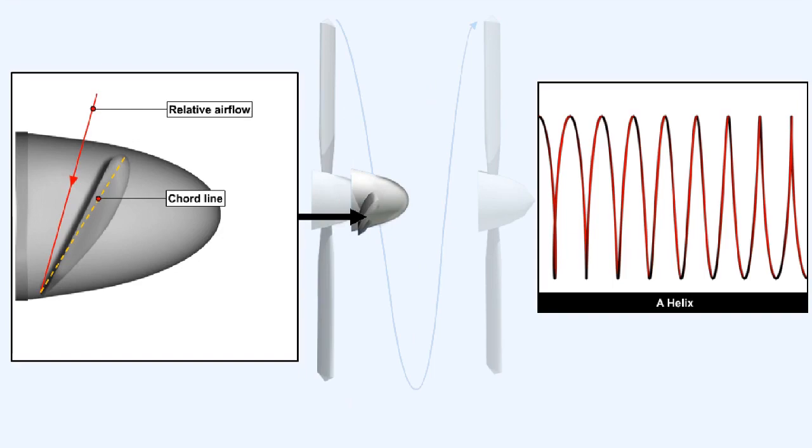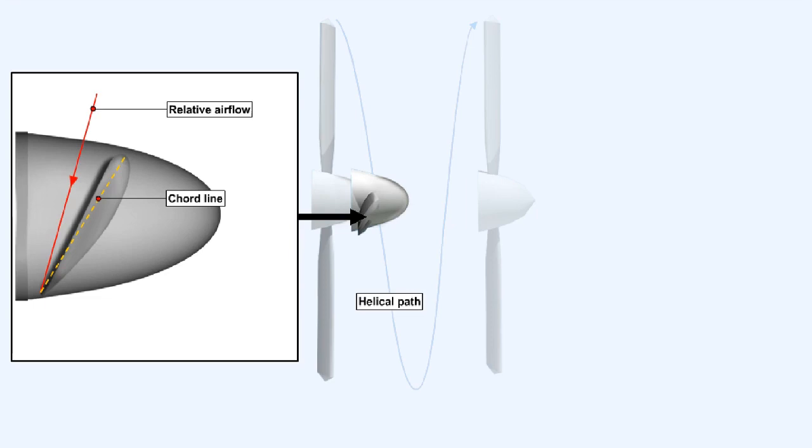The path of the propeller blade through the air, which describes a helix, determines the direction from which it will receive its relative airflow. This helical path is the resultant of the propeller blade rotational velocity and the aircraft forward velocity. The angle between the relative airflow, the actual path the blade describes through the air, and the chord line of the blade, is called the angle of attack.